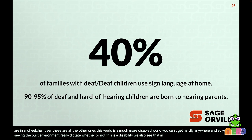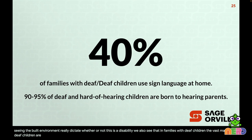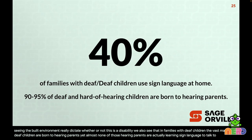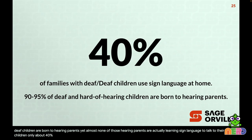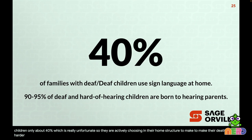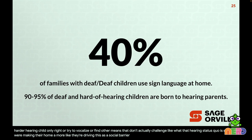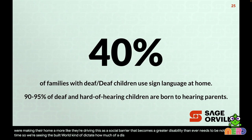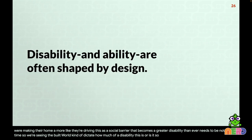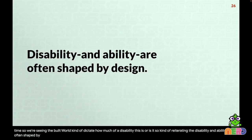We also see this with families of deaf children. The vast majority of deaf children are born to hearing parents, yet only about 40% of those parents actually learn sign language to communicate with their children. They're actively making their home structure create a greater social barrier. Disability and ability are often shaped by design — not by your body, not by your mind, but by the design of the world around you.